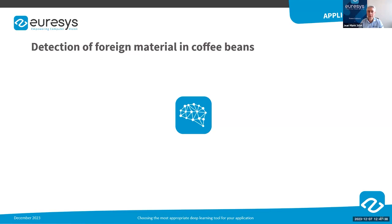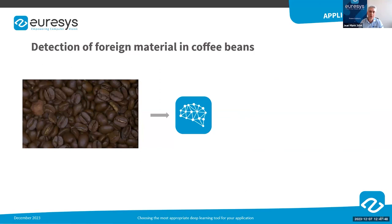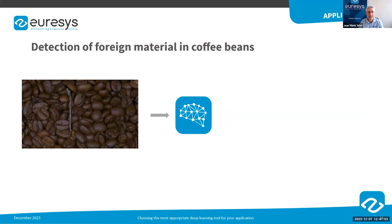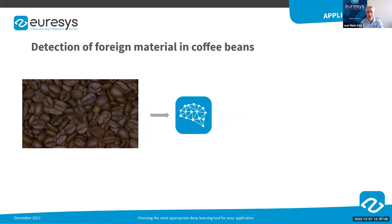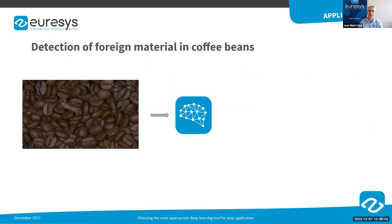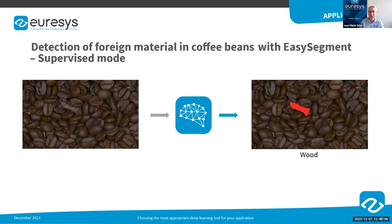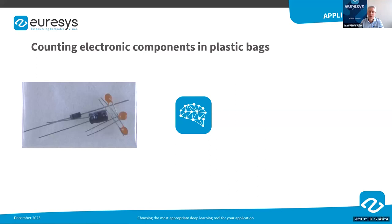Another domain where deep learning tools are interesting is the food industry. For instance, before the packaging process of food or vegetables, the presence of foreign material must be detected. For such an application, accurate localization of the foreign material is important because we need to remove it. Identification of the foreign material is also required to understand at which stage of the process it was introduced. Therefore, we need to detect defects, retrieve the position, and identify the material — so the supervised mode of EasySegment is the most adequate tool.